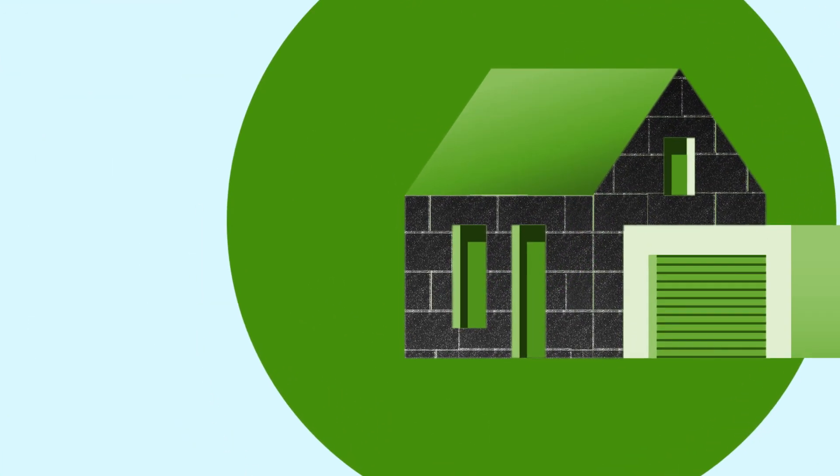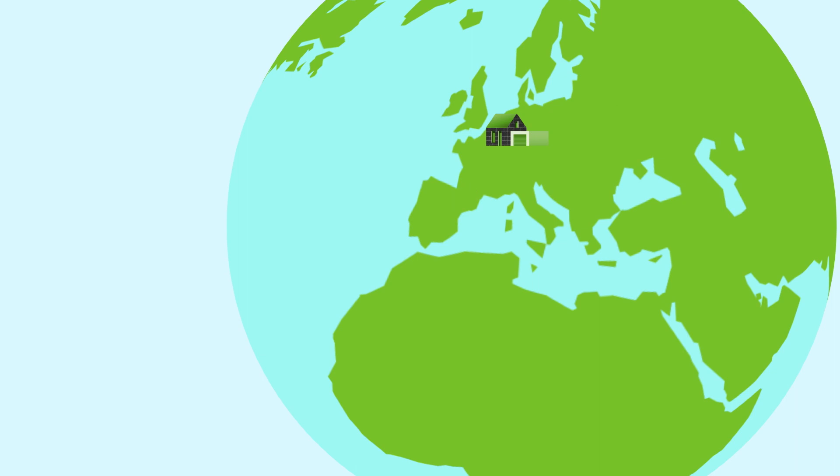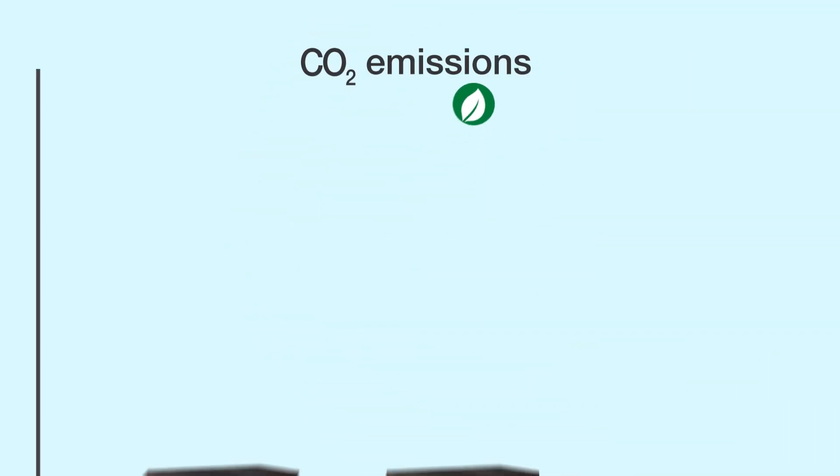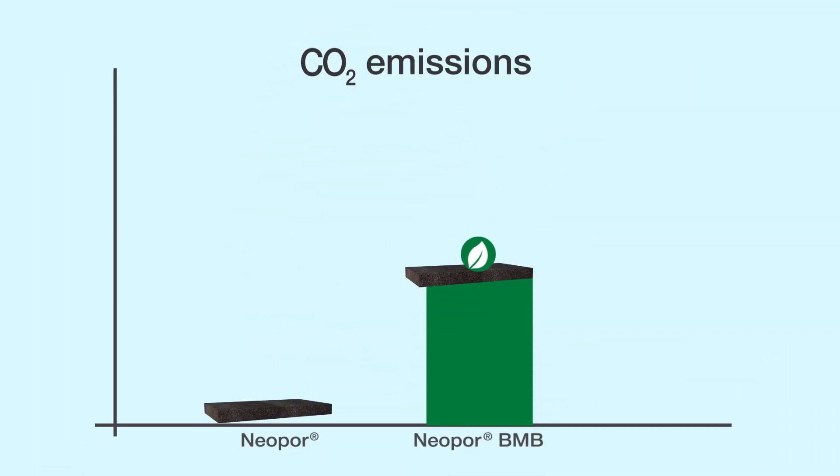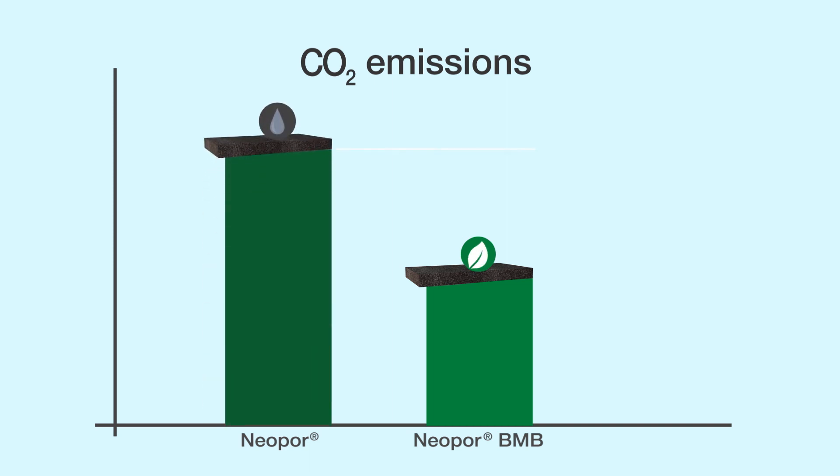By choosing insulation made of Neopor BMB, you will improve your carbon footprint significantly. Over the entire life cycle of this biomass balanced insulation material, CO2 emissions are reduced by approximately 42% compared with the fossil equivalent.